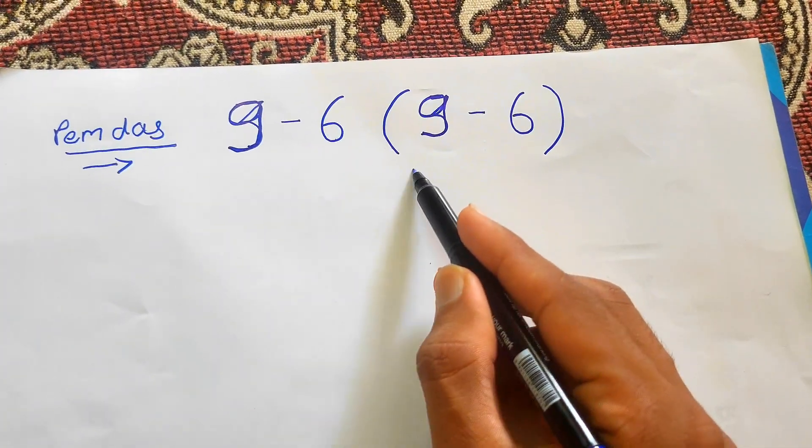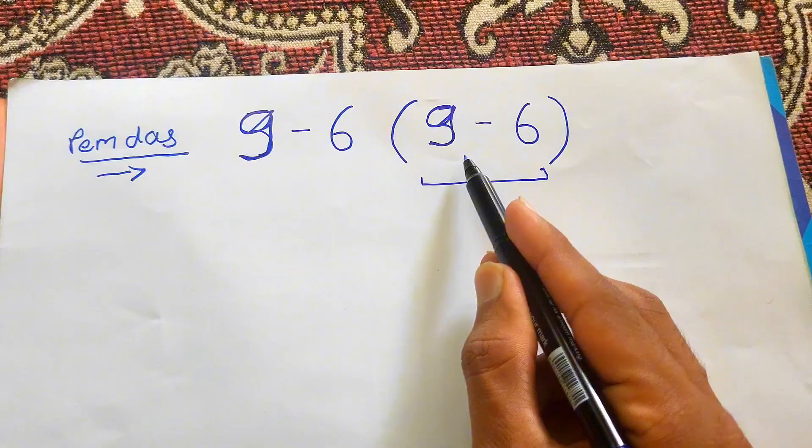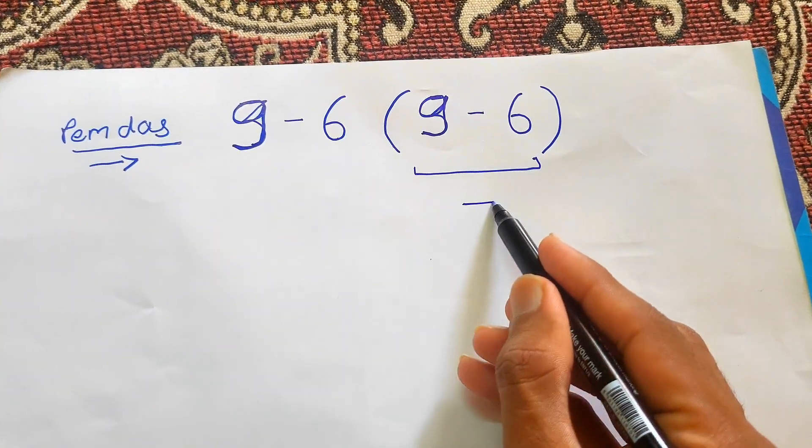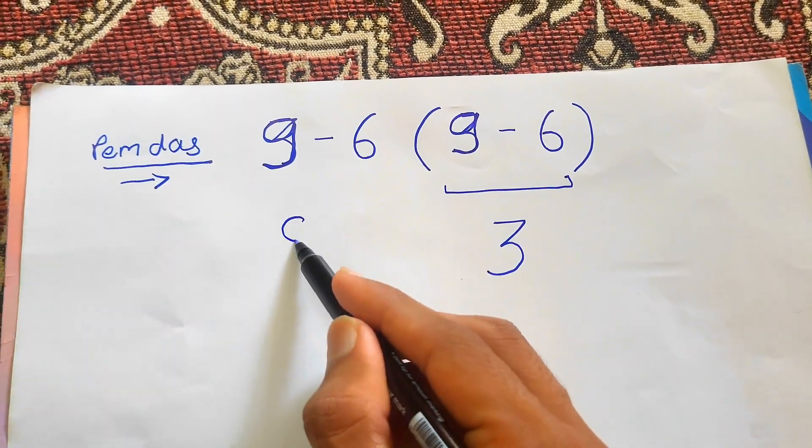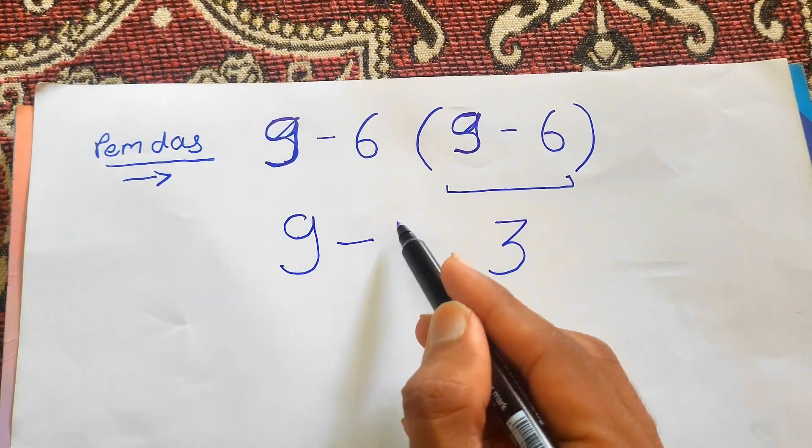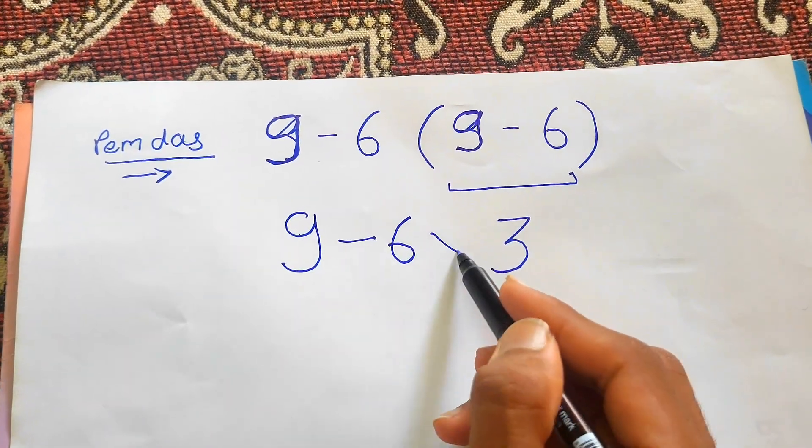That is 9 minus 6, which actually gives us 3. So we'll rewrite here 3. Now we need to rewrite the remaining expression as it is to make it more simple. So we'll write 9 minus 6 times 3.